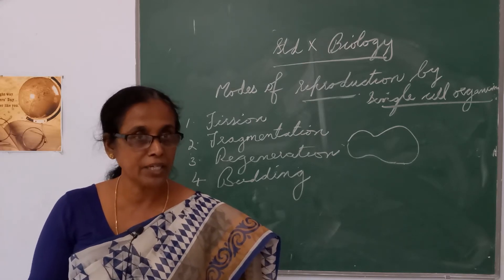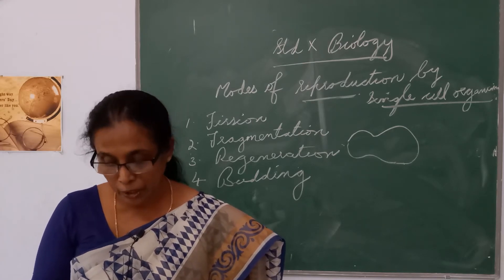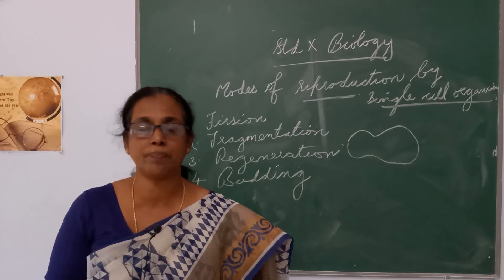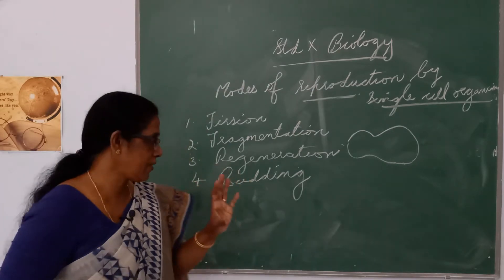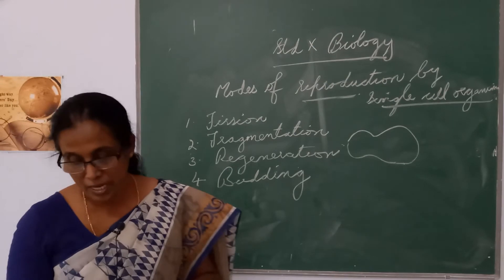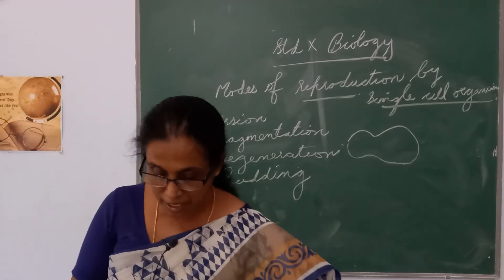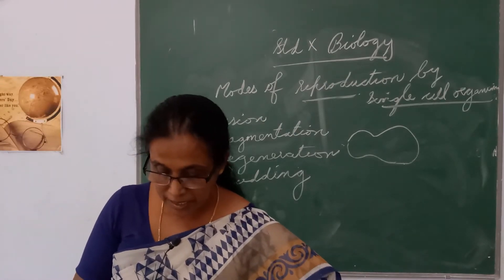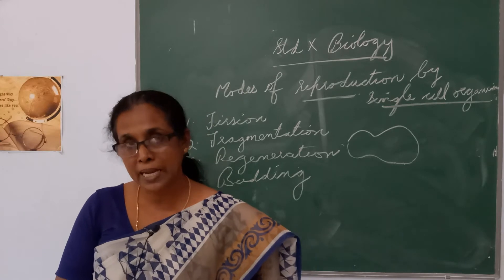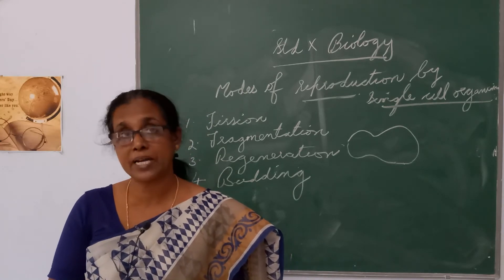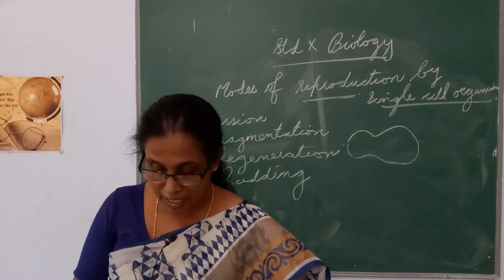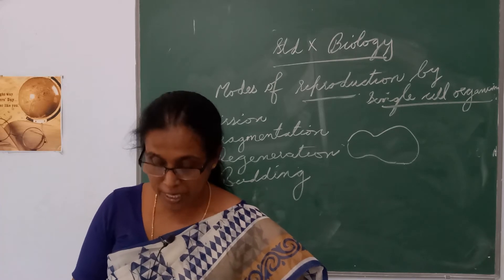In some organisms, for example the malarial parasite Plasmodium, the cell divides into many daughter cells simultaneously by multiple fission. There is only one cell in Plasmodium, and this Plasmodium is causing malaria.